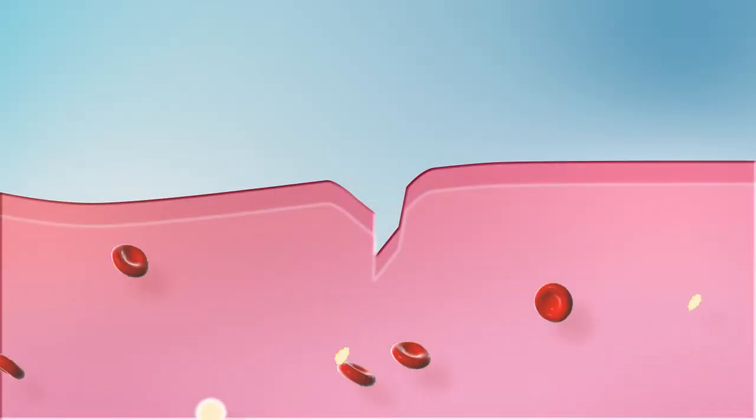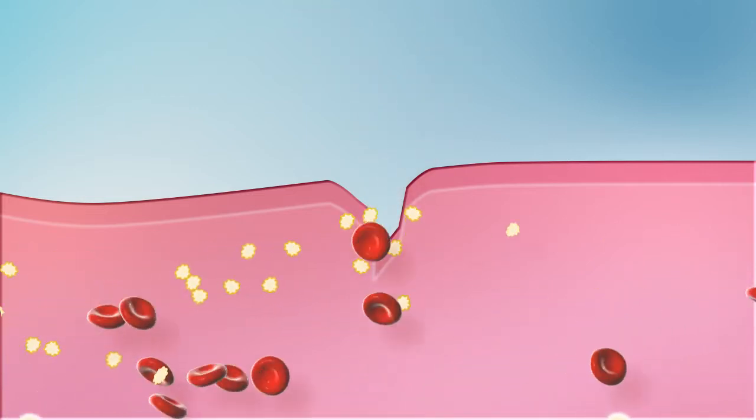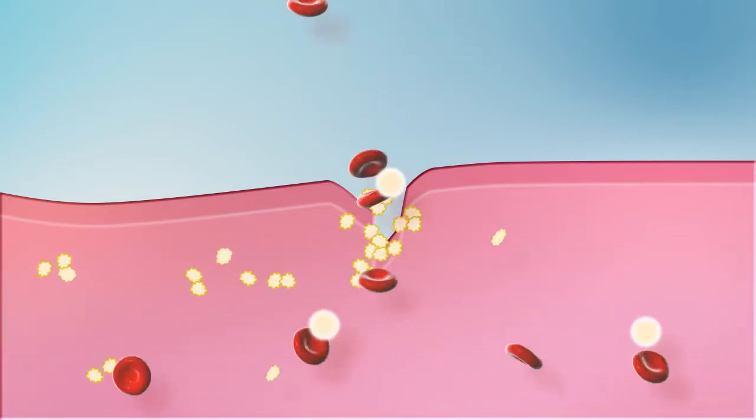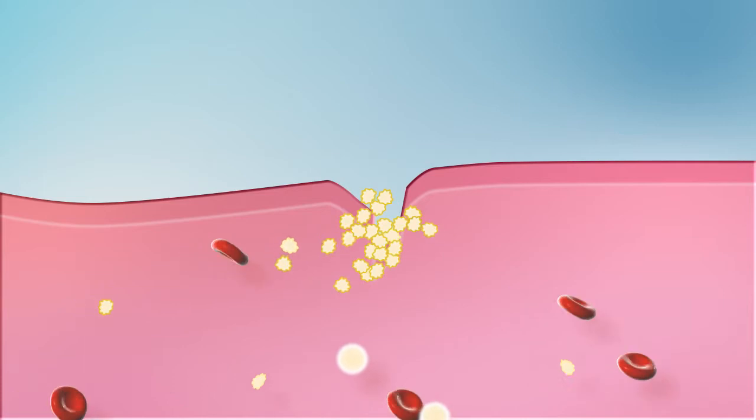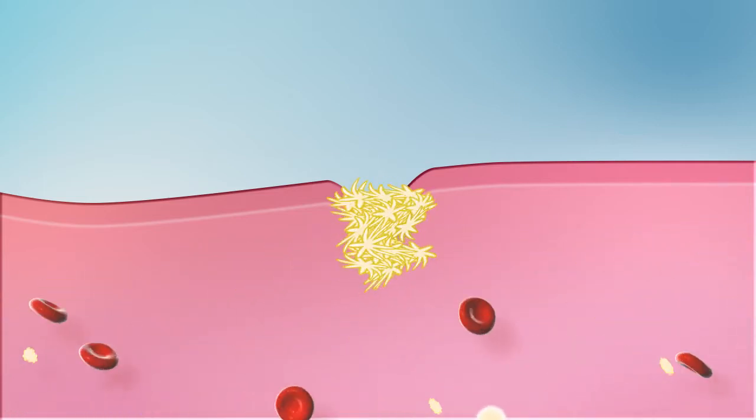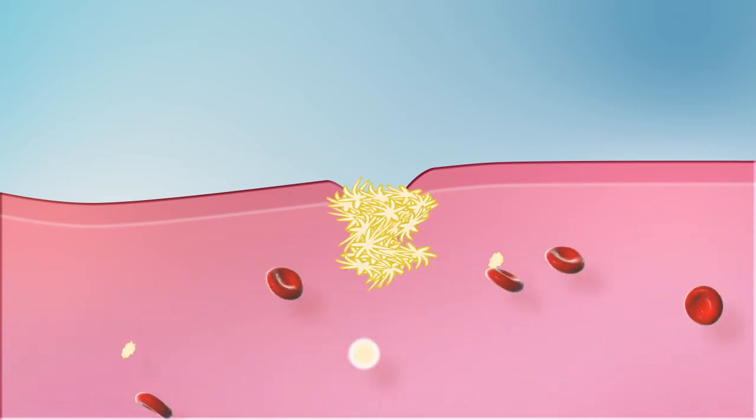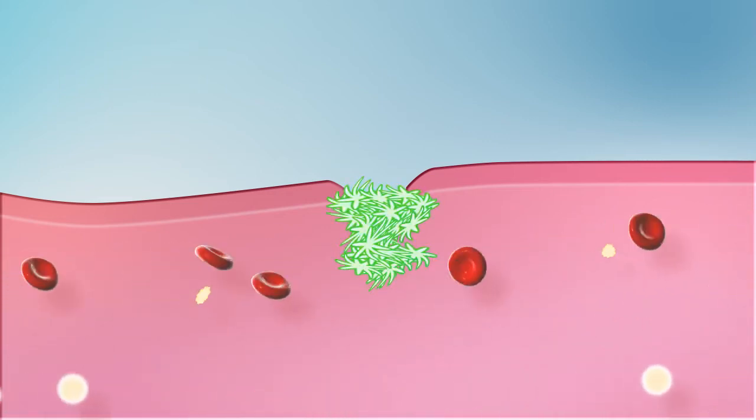When the platelets come into contact with the atmospheric air, they burst and liberate thromboplastin. Prothrombin, the enzyme produced in the liver, gets converted into thrombin by thromboplastin released from the broken platelets.